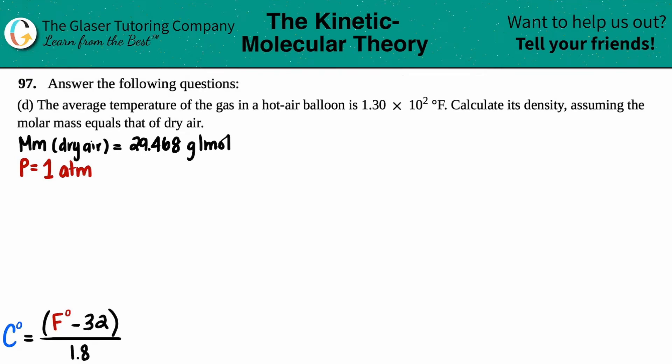Number 97. Answer the following questions. And then we're at letter D. So in this one it says the average temperature of the gas in the hot air balloon is 1.30 times 10 to the second degrees Fahrenheit. Calculate its density assuming the molar mass equals that of dry air.